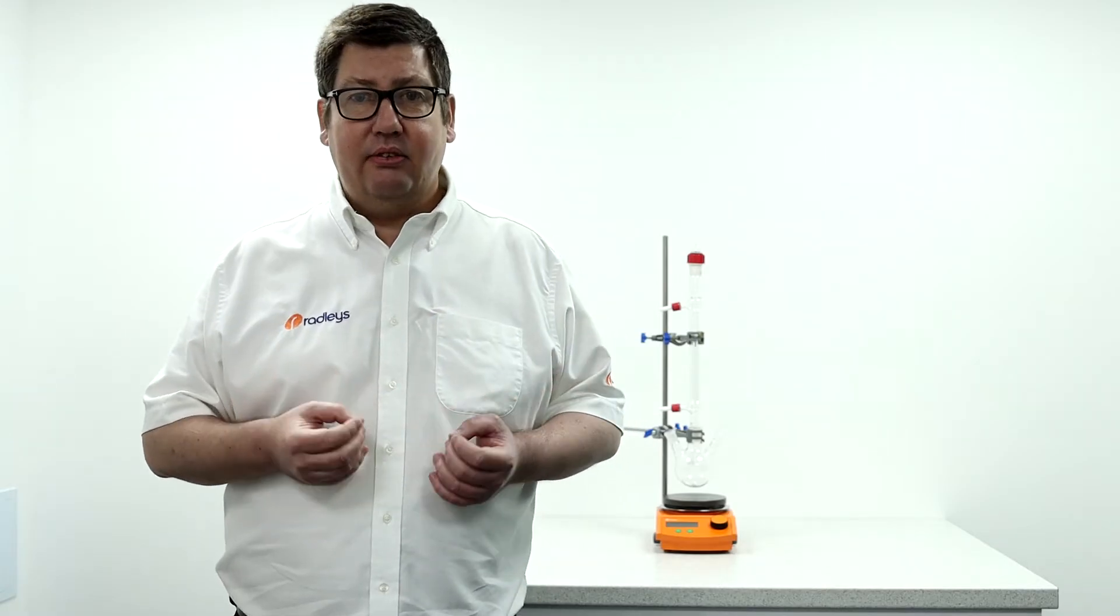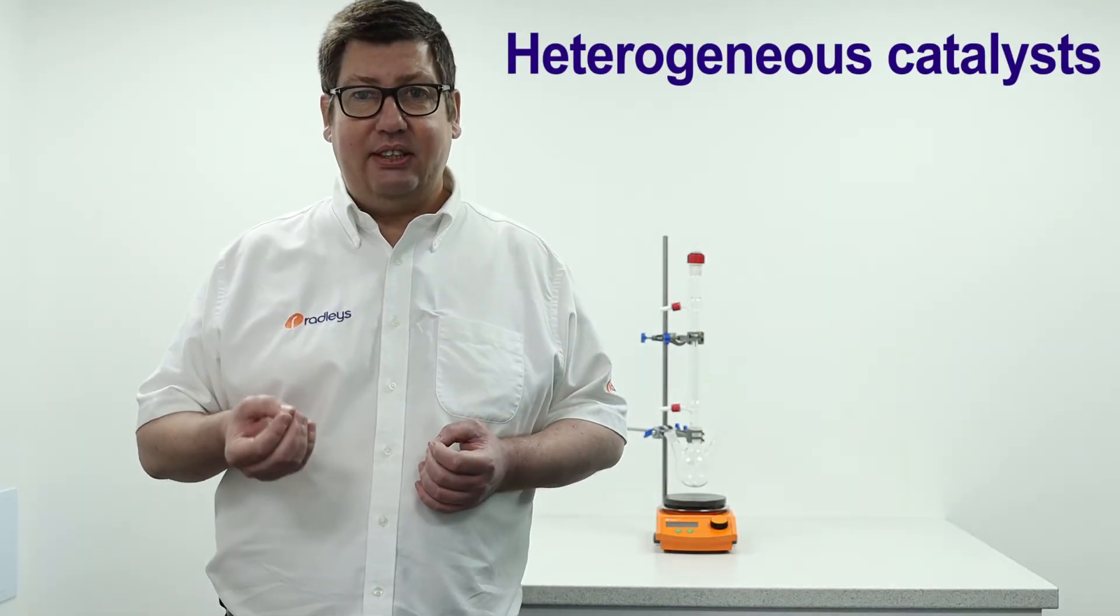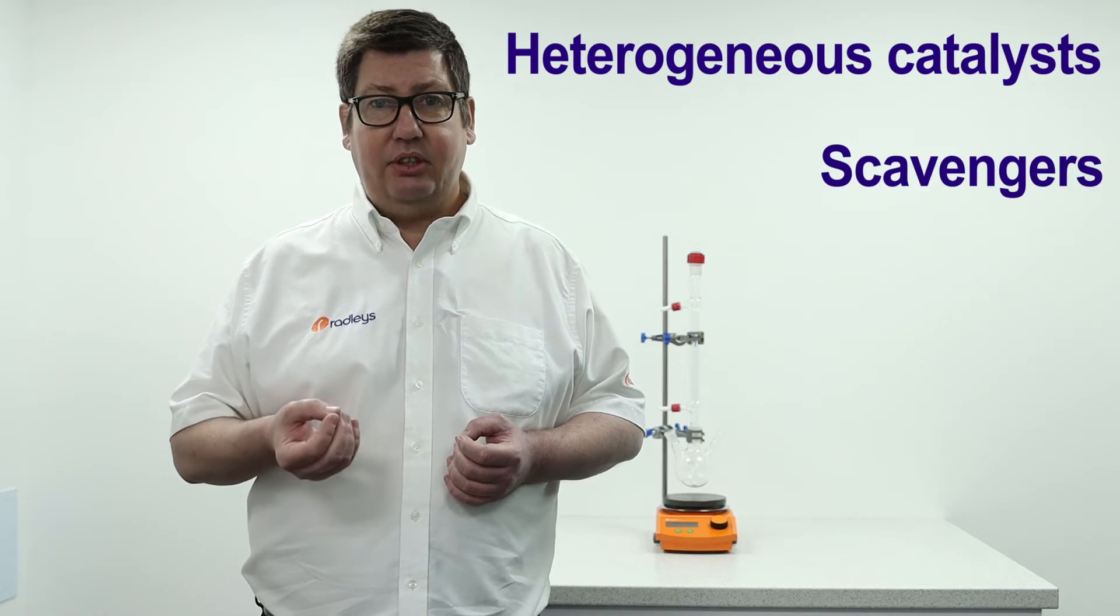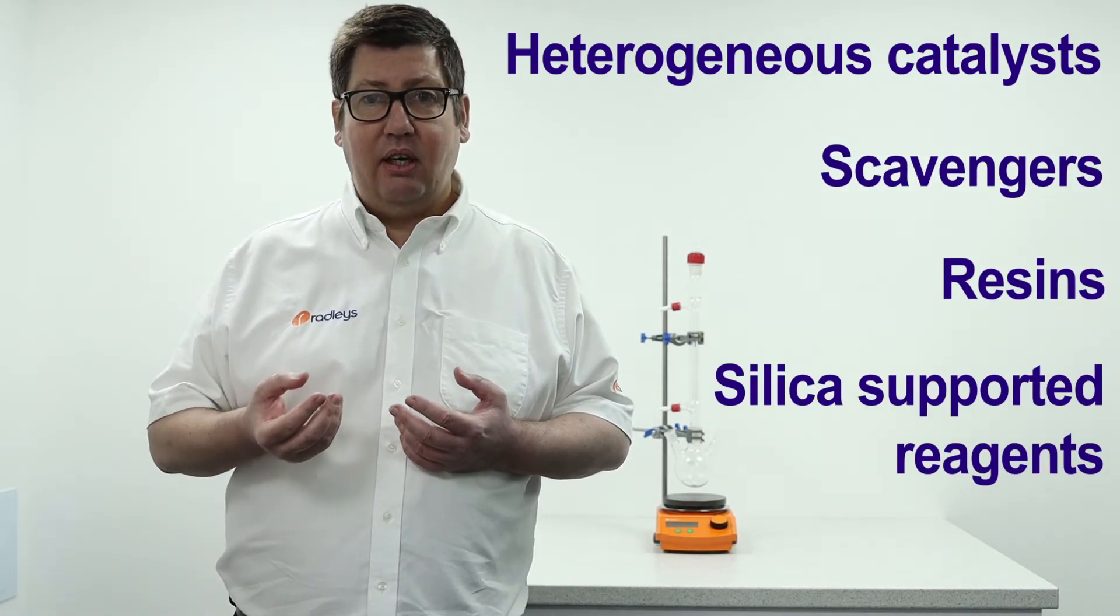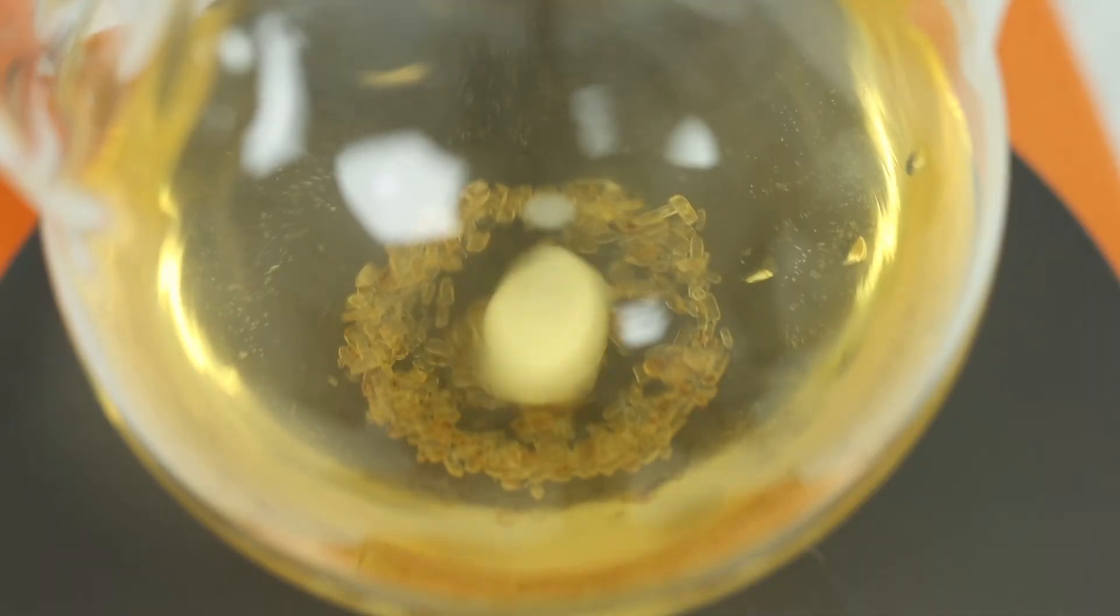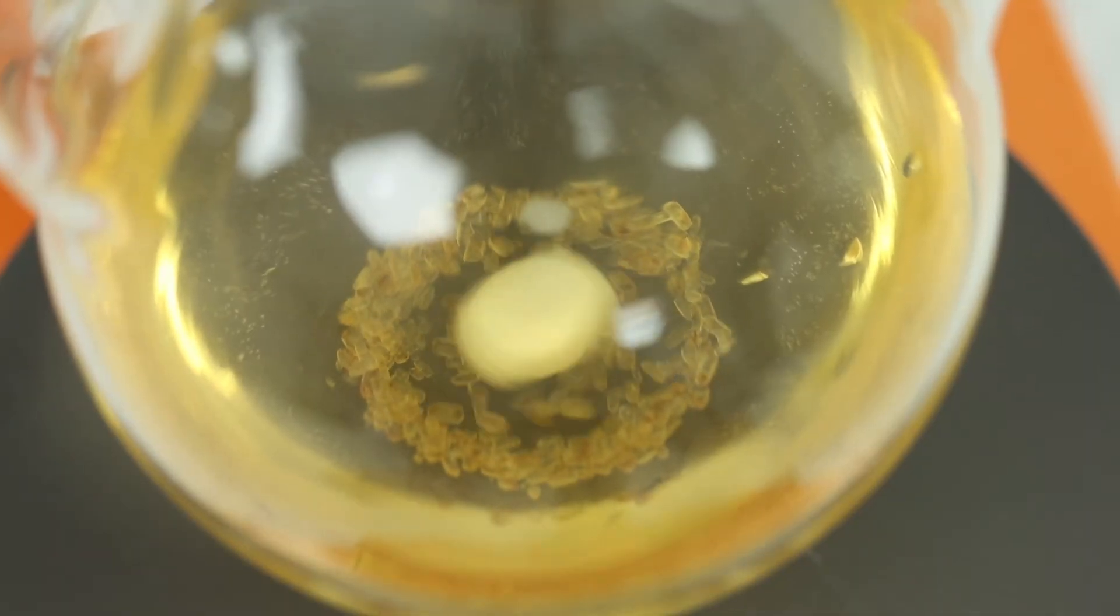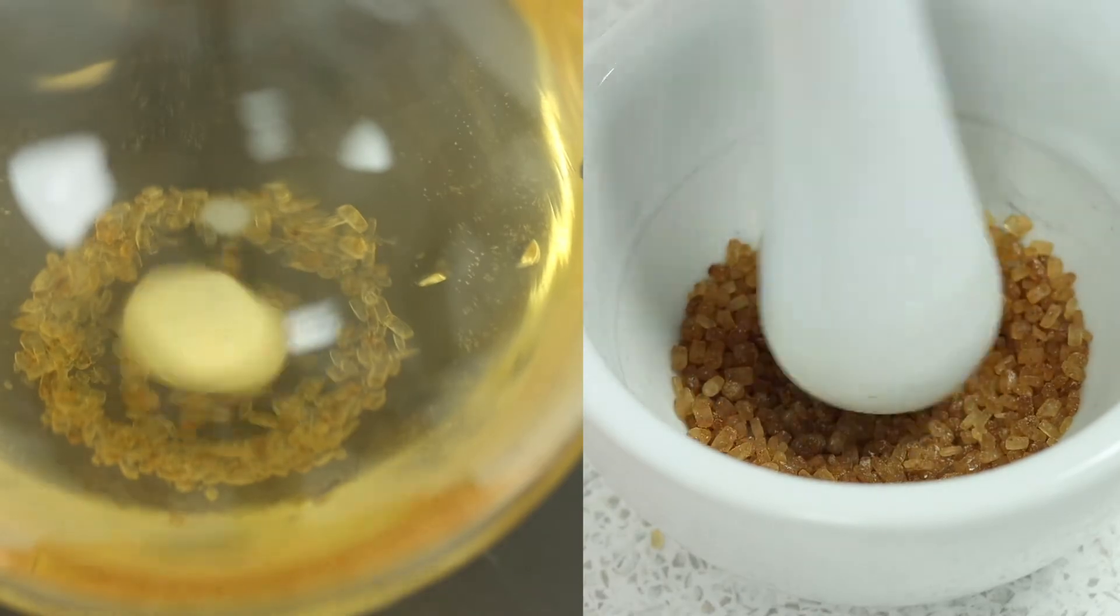Solids in the reactor, for example heterogeneous catalysis, the use of scavengers, resin or silica supported reagents are likely to be physically affected by the action of the stirrer bar having a grinding effect onto the particles, reducing particle size, increasing mass transfer and potentially giving different results to when we need to scale up to an overhead stirred system.